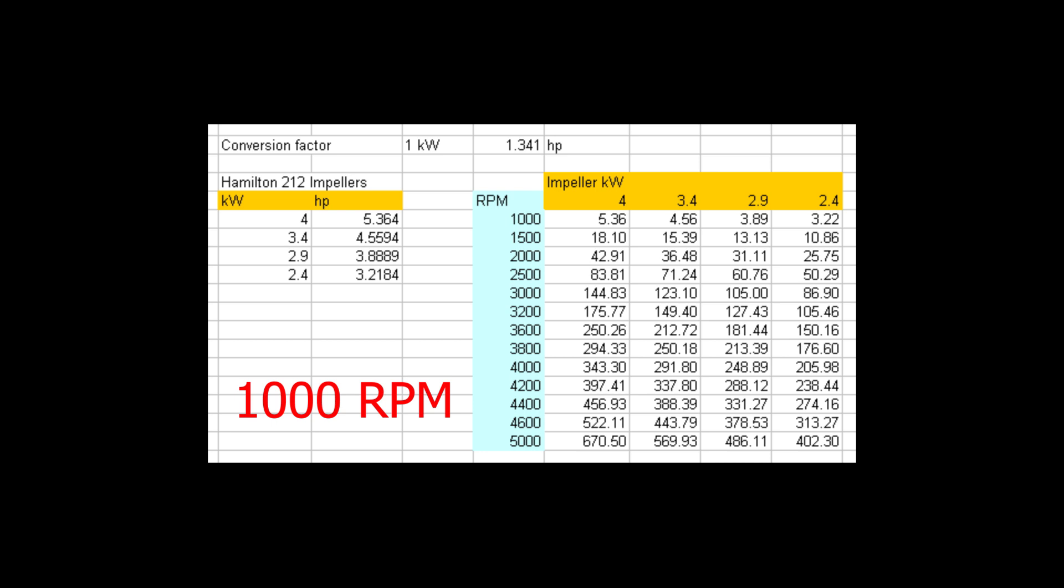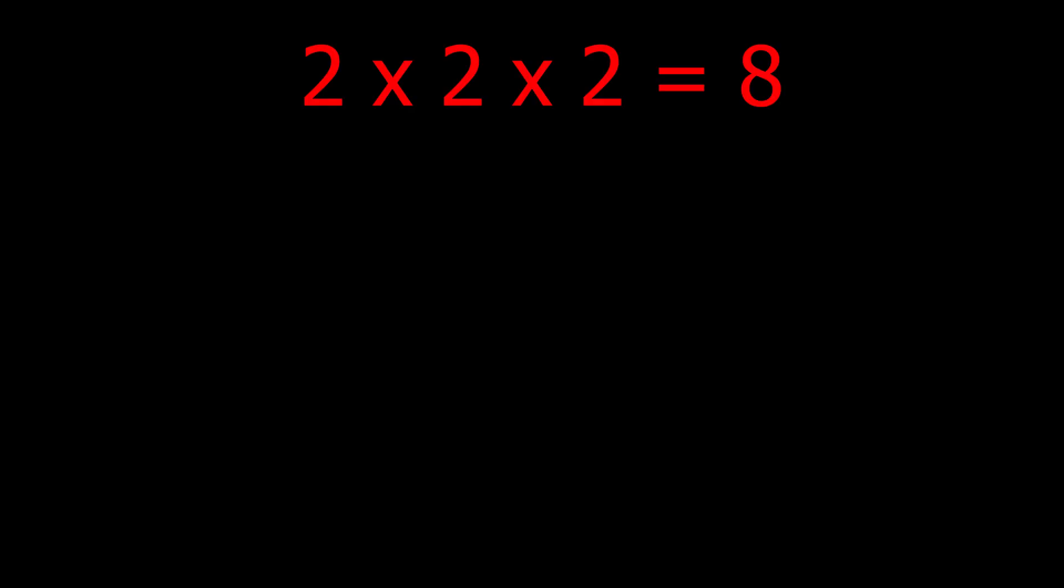So in other words, if you want to double the RPM from 1,000 to 2,000 RPM, then the power input is a cube of 2, or 2 times 2 times 2 is 8. So you need 8 times the power to double the RPMs. If you want to triple the RPM, then you need 3 times 3 times 3 is 27 times the power.